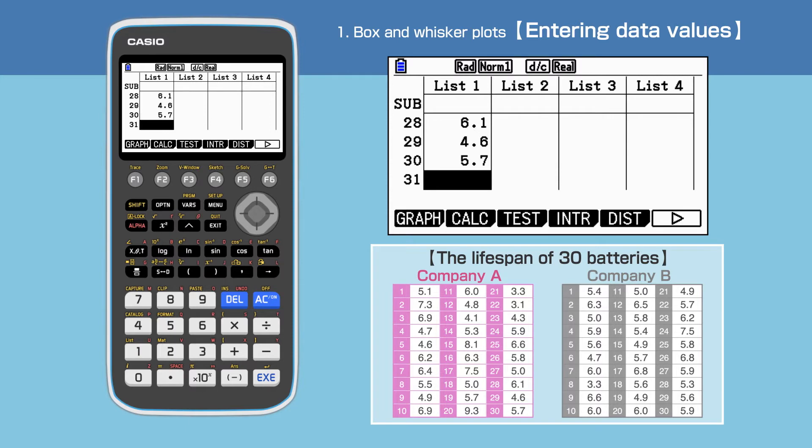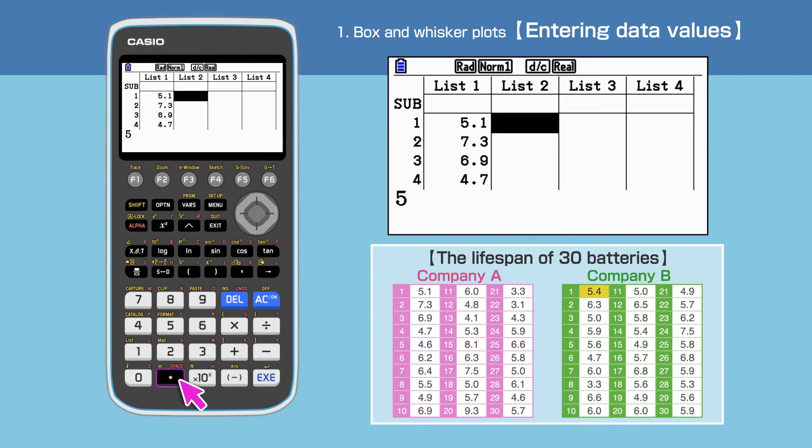Once we have finished with company A, we next need to input the dataset for company B. Move the cursor to the top of list 2. Input the data for company B.